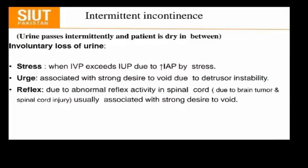In intermittent incontinence, urine passes intermittently and the patient is dry in between involuntary loss of urine. In stress incontinence, intravesical pressure exceeds intraurethral pressure due to abdominal stress. The second type is urge incontinence, associated with a strong desire to void due to detrusor instability. The third type is reflex incontinence due to abnormal reflex activity in the spinal cord due to pain, tumour, or spinal cord disease.